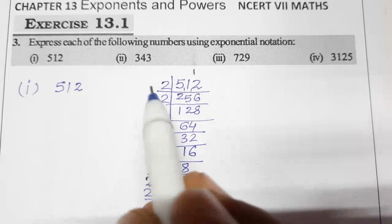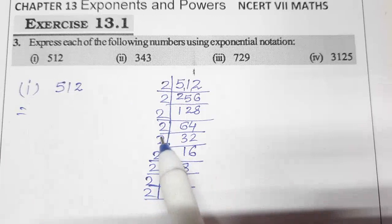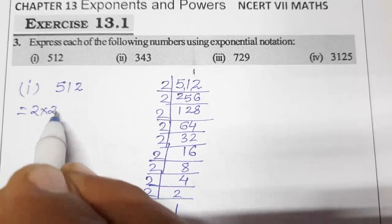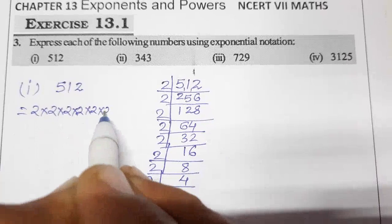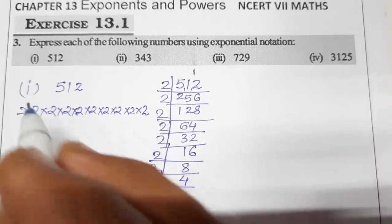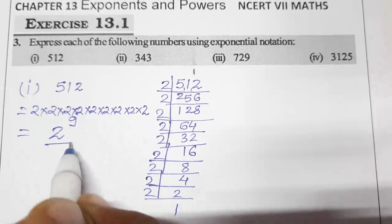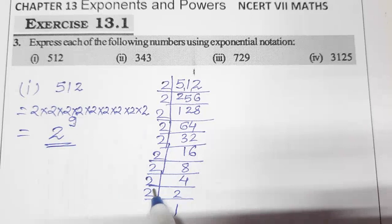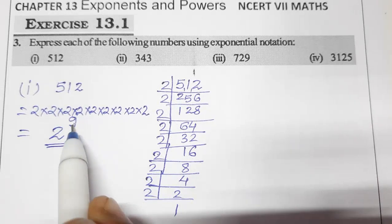So how many times? Let's count: 1, 2, 3, 4, 5, 6, 7, 8, 9 times. So we write 9 times like this, 2 into 2 into 2... So we have written 9 times. So we can write like this, 2 raised to the power 9. This is exponential notation. 2 ki power 9 ho gya.